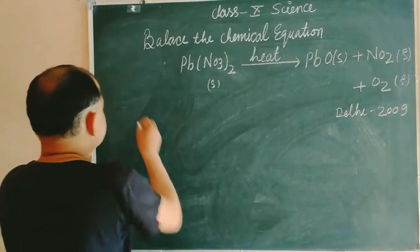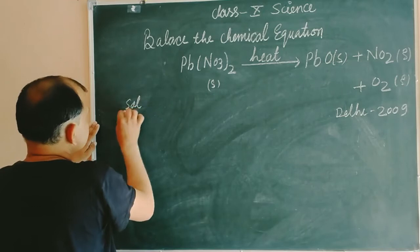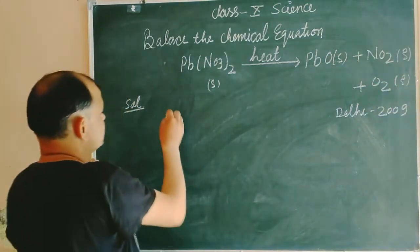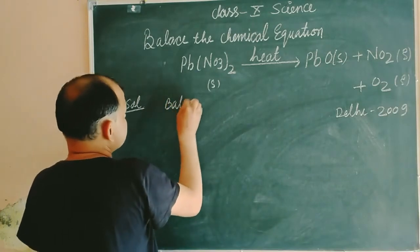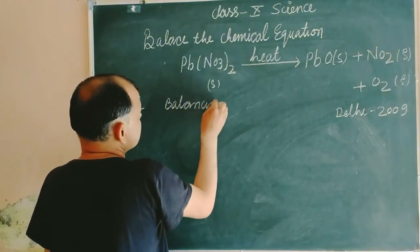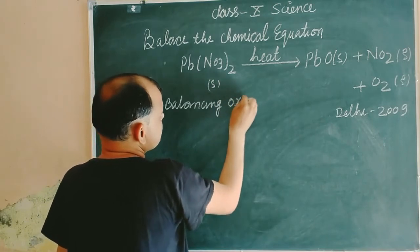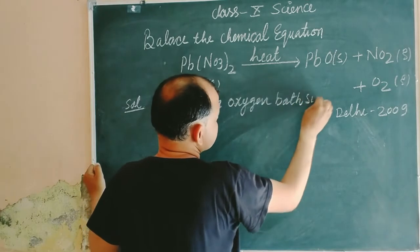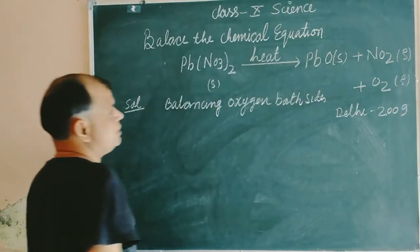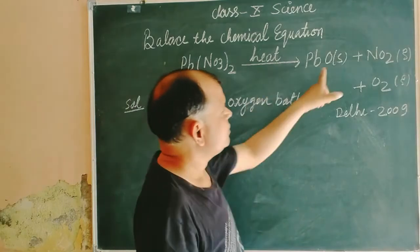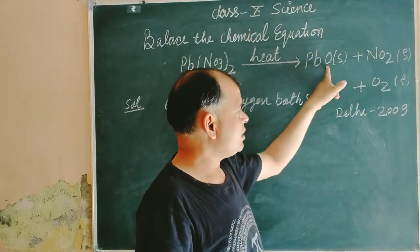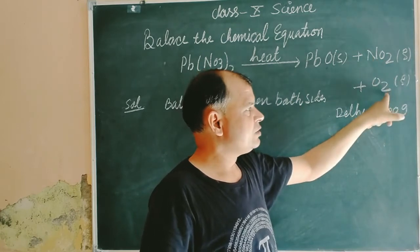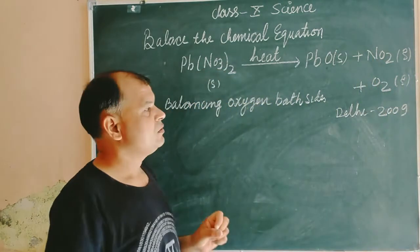First we balance oxygen from both sides. In the right side, we have 1 oxygen atom, here 2 oxygen atoms, so 3, 3 plus 2, this is 5. So in right side, oxygen are 5.